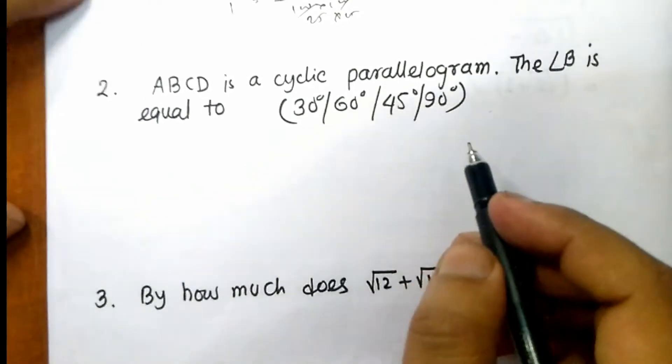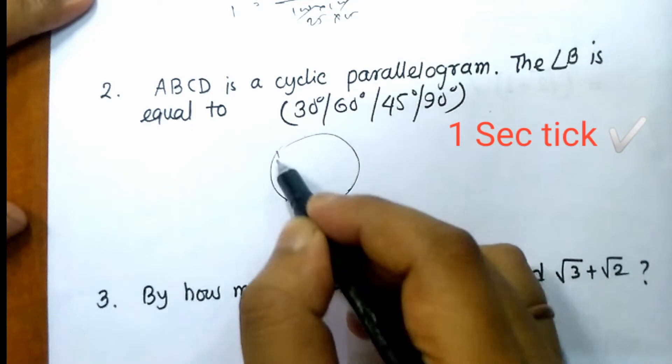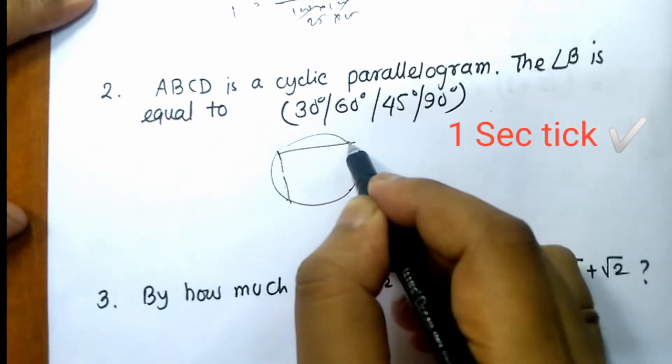Next. ABCD is a cyclic parallelogram. Then B is equal to? Cyclic parallelogram. We have to find a cyclic parallelogram.